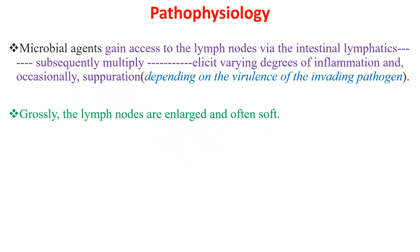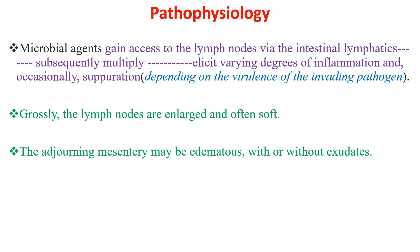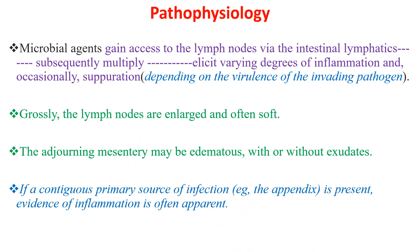Grossly, the lymph nodes are enlarged and often soft. The adjoining mesentery may be edematous, with or without exudates. And if a contiguous primary source of infection — for example, the appendix — is present, evidence of inflammation is often apparent.